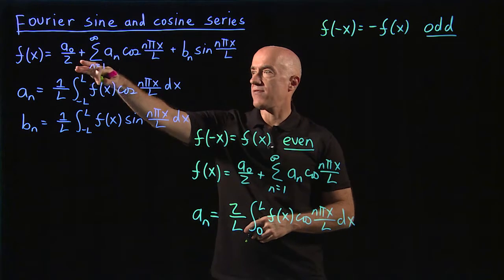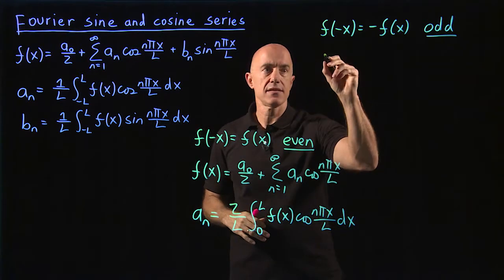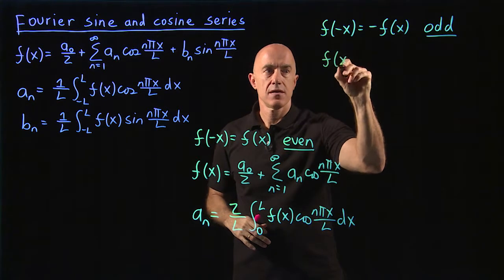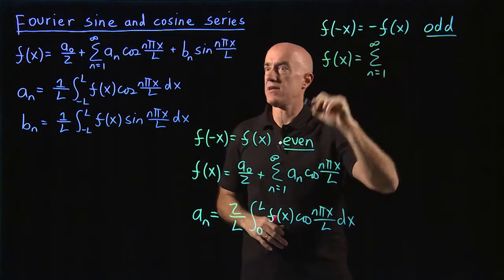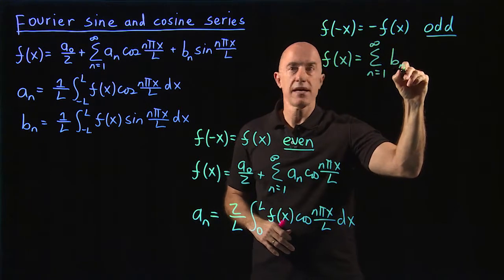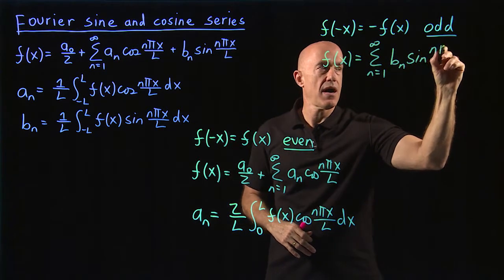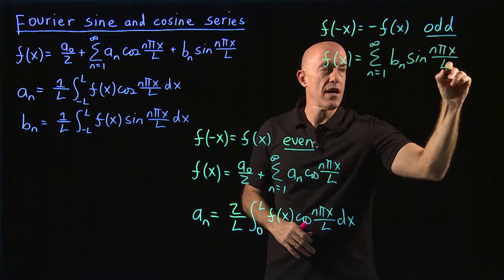So here the a's are all 0, and all you have left are the b's. So in this case f of x is the summation from n equals 1 to infinity of b sub n sine n pi x over L.